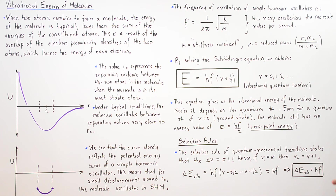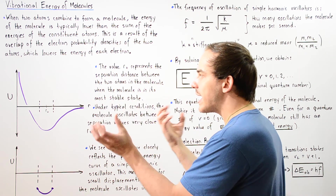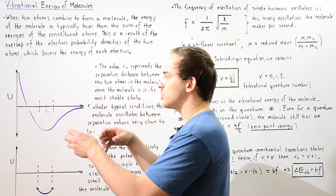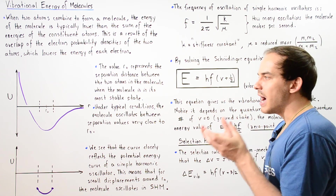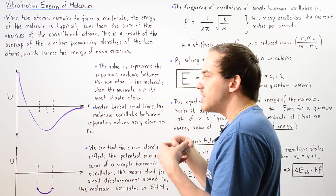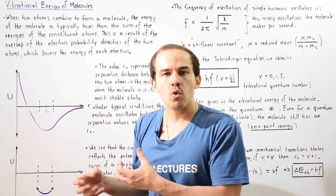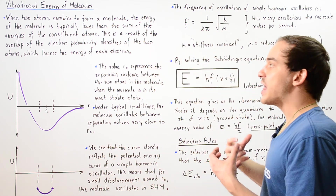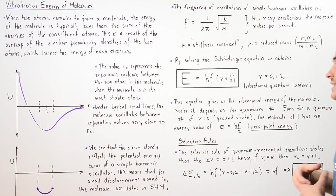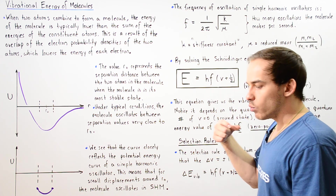So basically, as a result of the vibrational motion — the oscillation of our molecule — the molecule can undergo a change in vibrational energy, and that can lead to an electron transition.